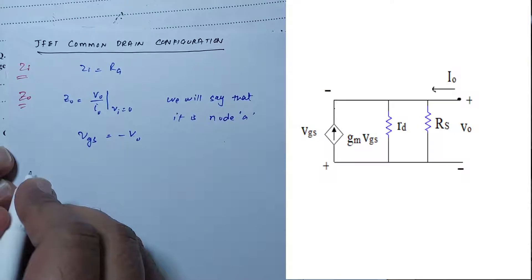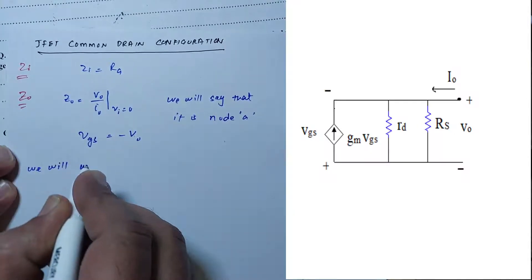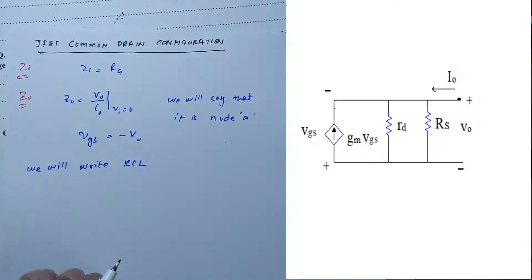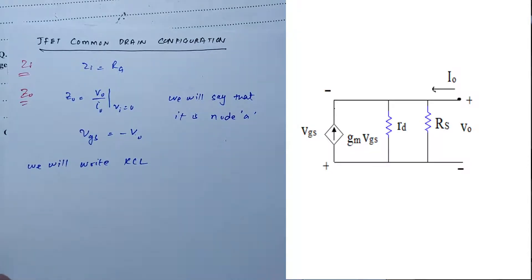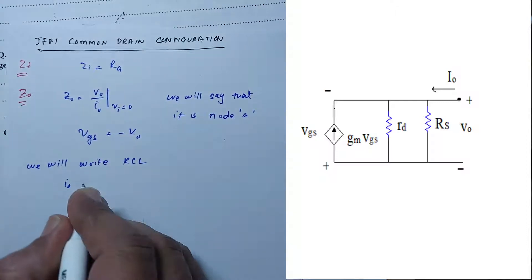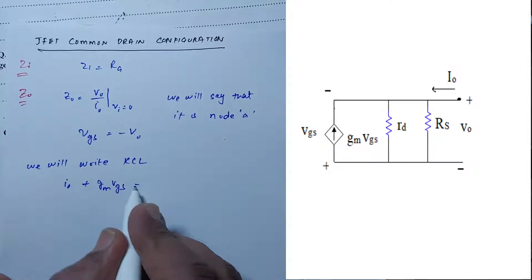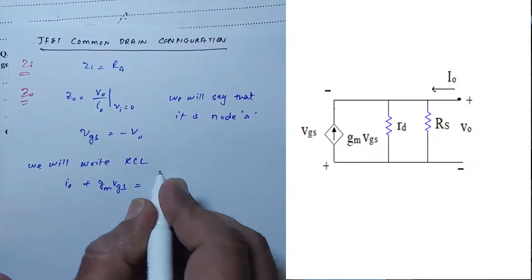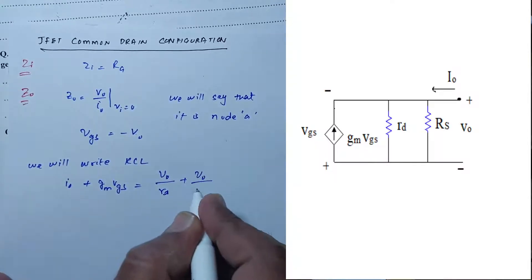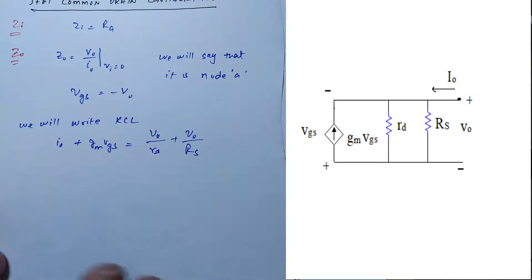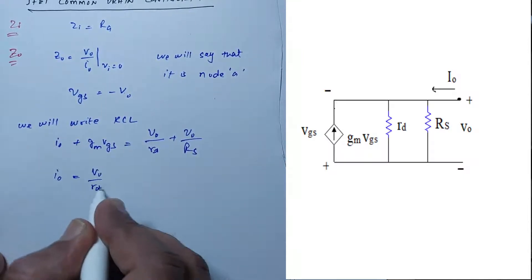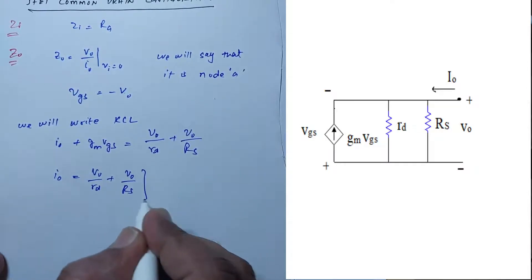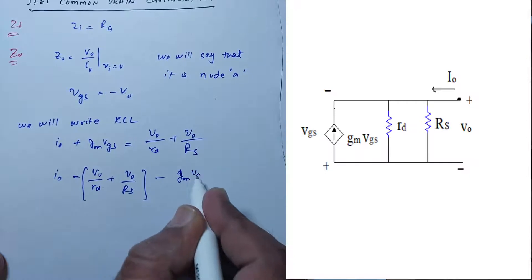We will write KCL at node A. This gives us: V_not over Rd plus V_not over Rs. This is a simple configuration. We also have the current source term, which is minus gm times VGS.